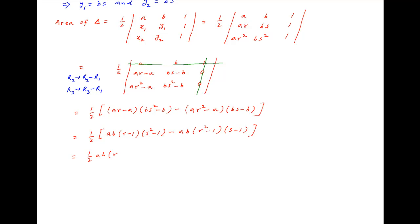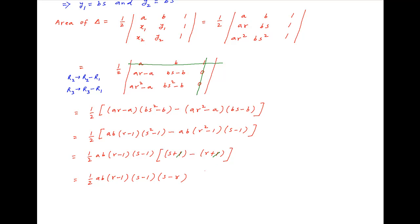Now, taking ab times r minus 1 times s minus 1 common, the area of the triangle is equal to half of ab times r minus 1 times s minus 1 times, in brackets, s plus 1 minus r plus 1. This simplifies, resulting in half of ab times r minus 1 times s minus 1 times s minus r, which is the required answer.